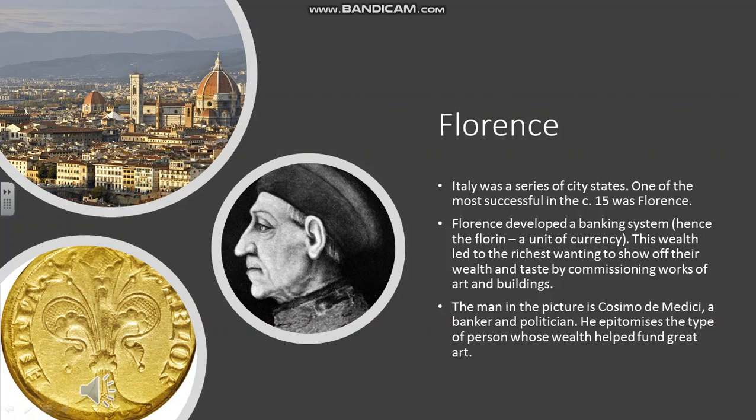A good example of a city-state is Florence. Florence became extremely wealthy in this period, largely as a result of developing techniques in banking. Cosimo de' Medici was a good example of this — he made a fortune from being a banker, but also as a politician. He had huge influence as one of the leading families in Florence. He wanted to show off his wealth by commissioning works of art, including portraits of himself. On the left you can see the florin, the unit of currency, another reason behind Florence's wealth.